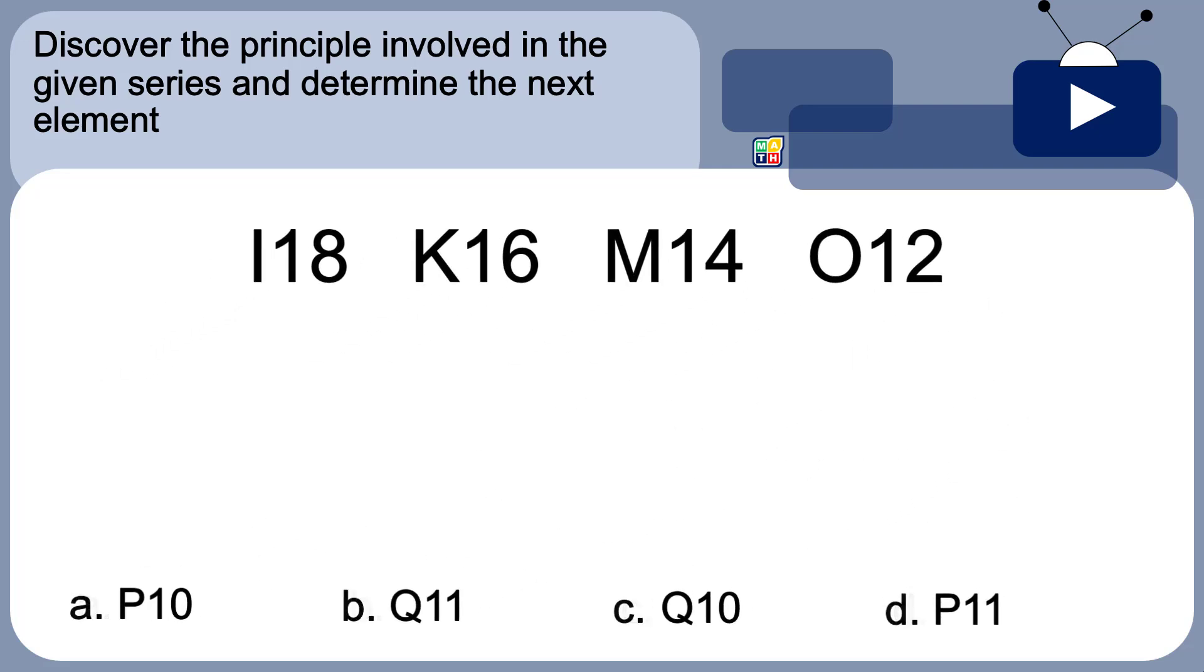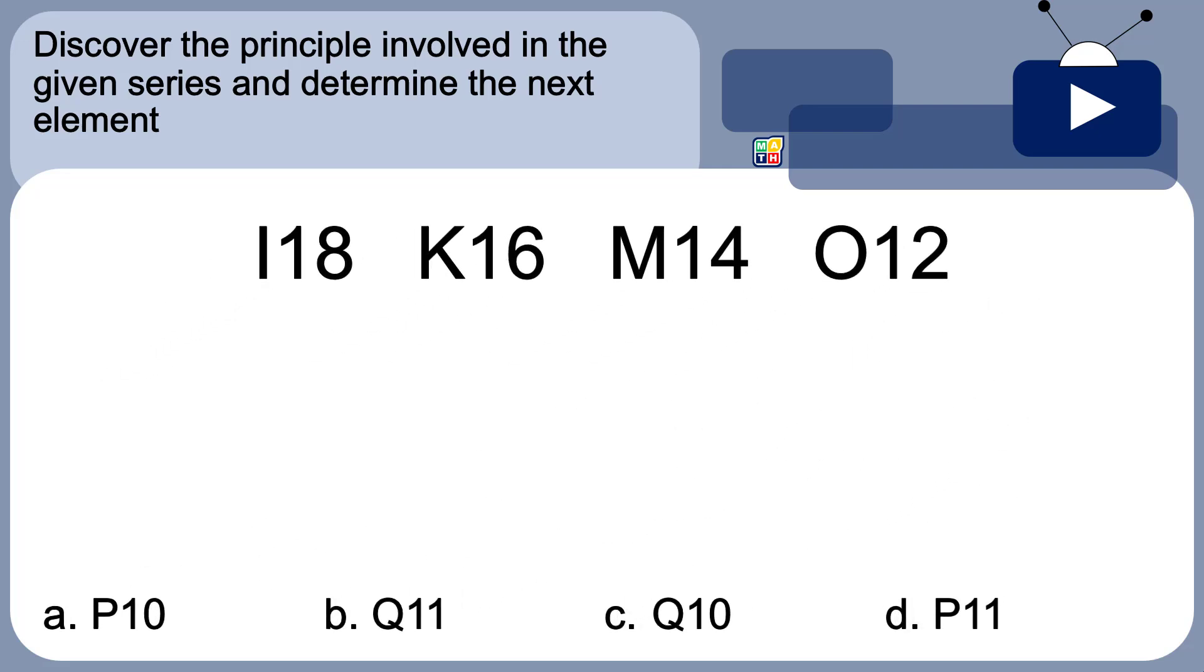So, dito po, meron tayong combination ng number and letter series. We just need to look into the principle of each on the number and on the letter. And let's combine them to come up with the next element. Now, look at our letters first.